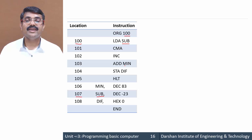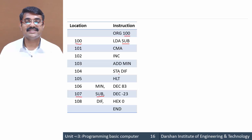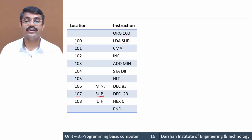Next, ADD MIN adds the content of the accumulator to the address specified by symbol MIN. MIN has address 106, where the value 83 is stored, and it is added to the accumulator. Then STA DIF stores the accumulator content to memory location DIF at address 108. Then HLT halts the computer — no further instructions are executed. Finally, END tells the assembler the program has ended.